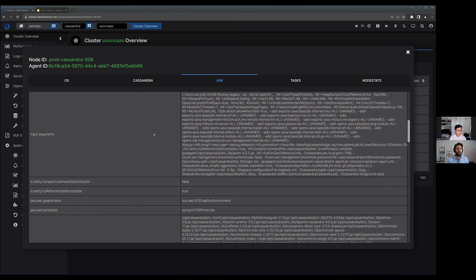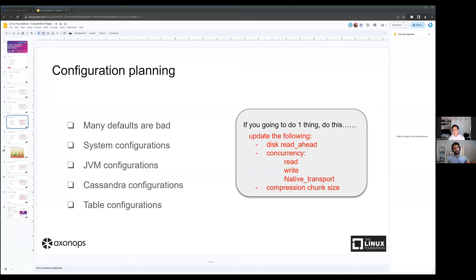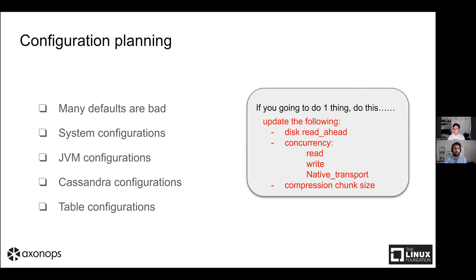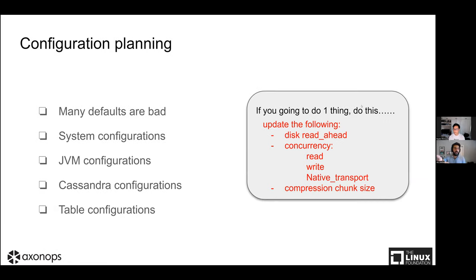Having a process to understand the difference when you make a change is super important, and that leads into the bigger observability discussion - how can you tell whether the config changes you're making are having the expected effect. One last thing: table configurations. I talked about read-ahead and read amplification. There's also a table-level configuration that matters - when you describe your schema you'll see compression settings including the chunk_length_in_kb. That's the size of a buffer filled with data, compressed, and written to disk.